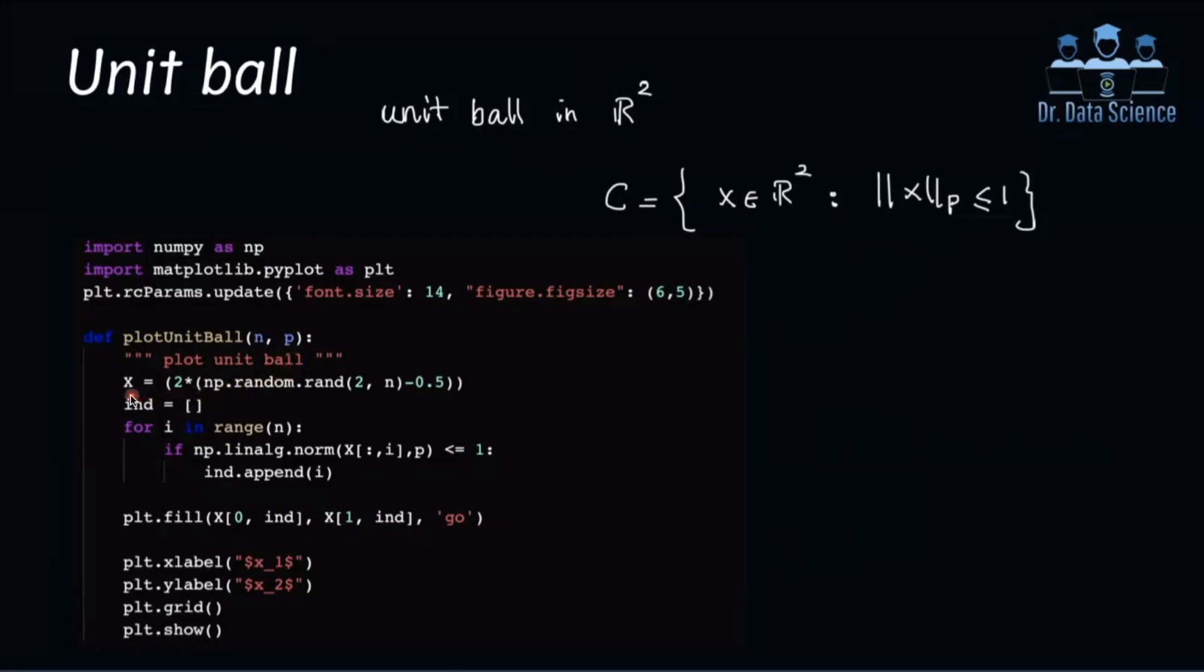So in order to solve this problem here, I'm going to first use a random number generator, and I'm going to create n data points in a two-dimensional space. So because I'm using this uniform number generator, these generated values will be between 0 and 1. So what I'm going to do, I'm going to subtract 0.5. So now they're going to be between negative 0.5 and 0.5. And then I'm going to multiply this by 2. So in this case, what will happen is that I get values between negative 1 and 1.